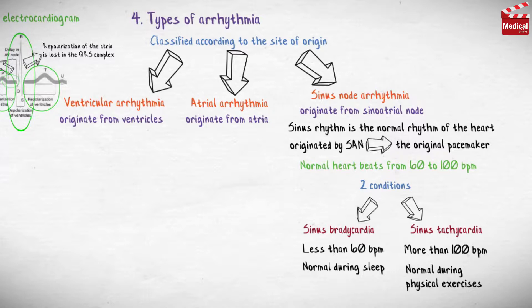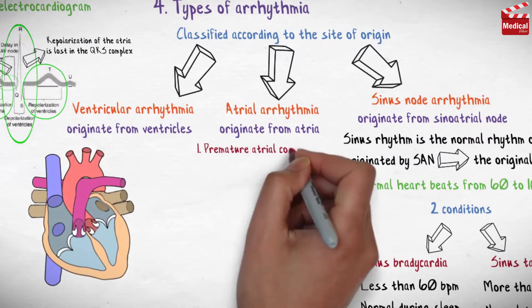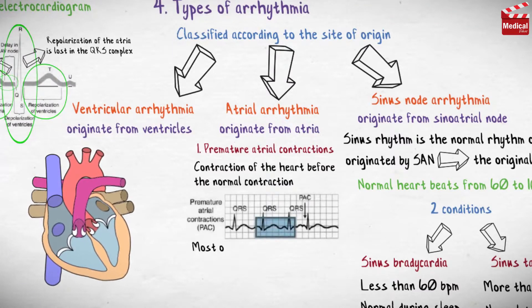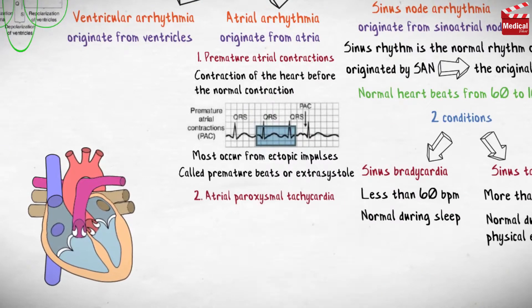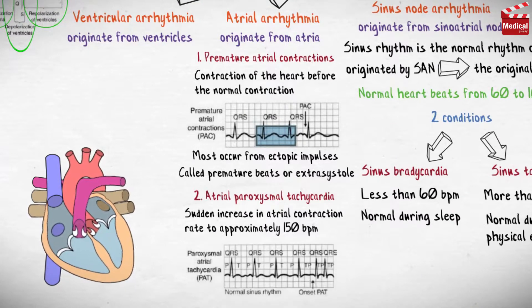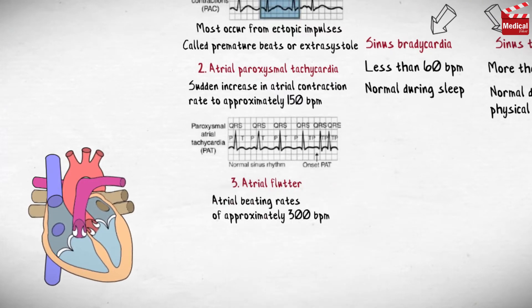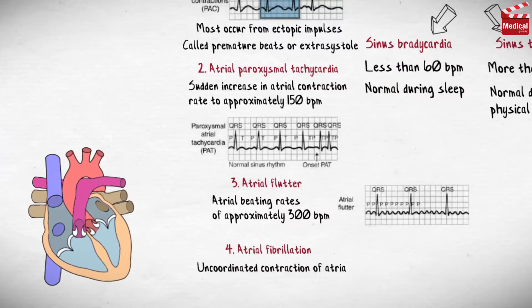We'll briefly discuss the conditions of atrial arrhythmia. Premature atrial contractions: contraction of the heart before the normal contraction, most often from ectopic impulses, also called premature beats or extrasystole. Atrial paroxysmal tachycardia: a sudden increase in atrial contraction rate to approximately 150 beats per minute. Atrial flutter: atrial beating rates of approximately 300 beats per minute. Atrial fibrillation: uncoordinated contraction of the atria.